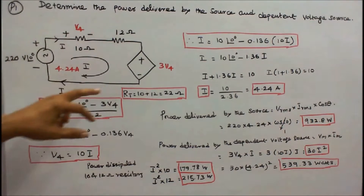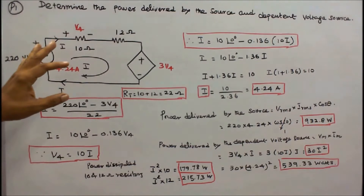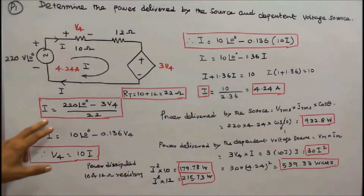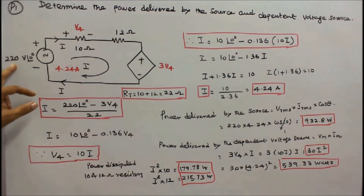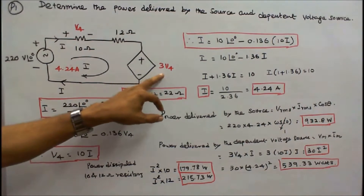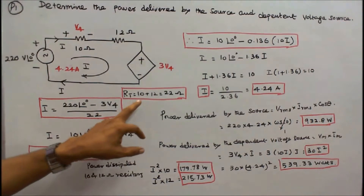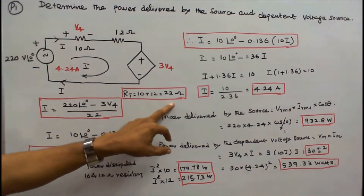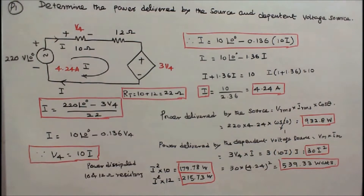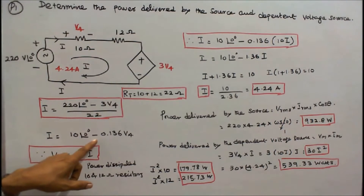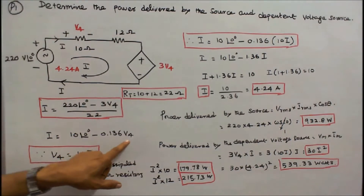Apply Kirchhoff's current law to find the total current I. I is equal to 220 angle 0 minus 3 times V4, divided by total resistance. Total resistance is 10 plus 12, equal to 22 ohms. Therefore I equals 220 divided by 22, minus 3 divided by 22, which equals 0.136 V4.